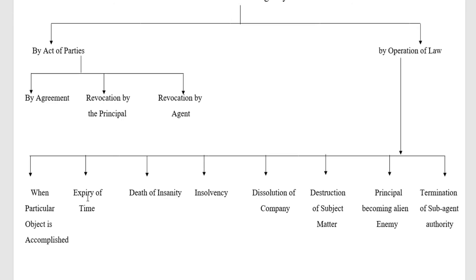The second circumstance is expiry of time. If a principal makes a contract with the agent to supply goods to a third party for a period of one year or 12 months, after the expiry of that time the contract of agency will be terminated. So the agency may be terminated either by completion of the object or by expiry of time.